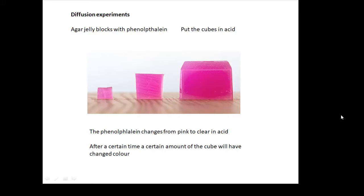So if I put these jelly blocks in acid, they will become clear because the indicator will turn from purple to clear. After a certain time, all of the cubes will eventually change color and become clear. There won't be any purple anymore.